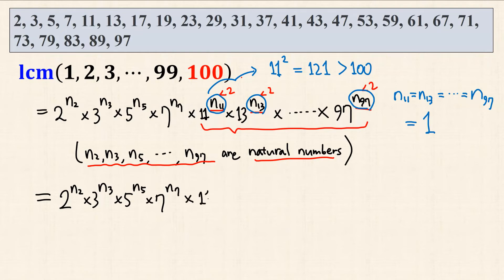then just 11, 13, 17, all the way up to 97. So we only have to determine n2, n3, n5, and n7.